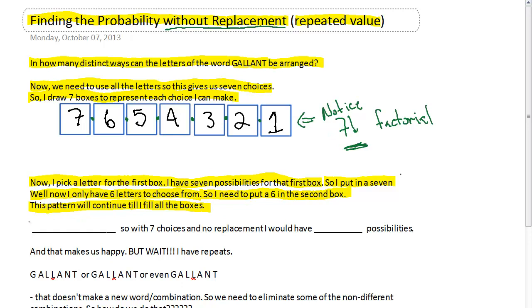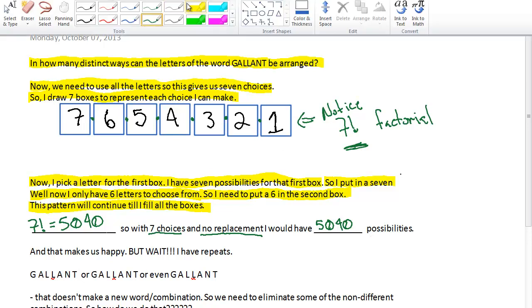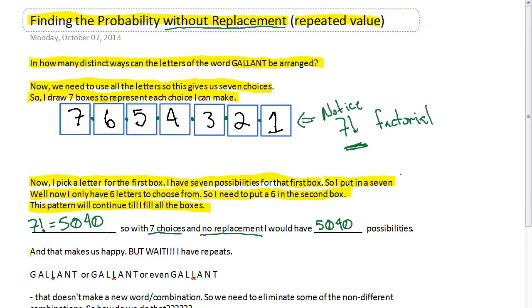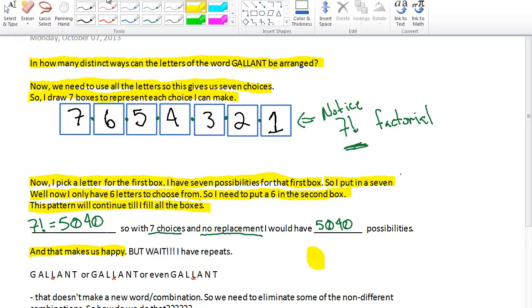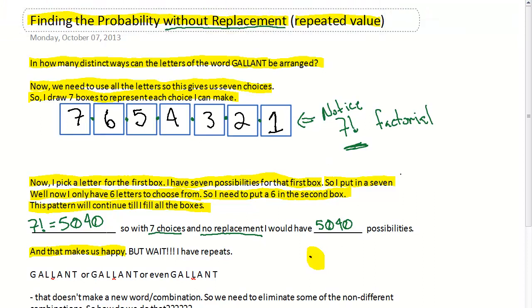So seven factorial is equal to 5040, so with seven choices and no replacement, I would have 5040 possibilities. All right, and that makes us happy. How happy? I'll show you how happy. There's my little shiny smiley face, the sun is out and everything is bright. And so this is how you would do it without replacement.